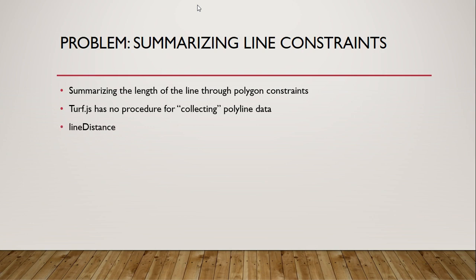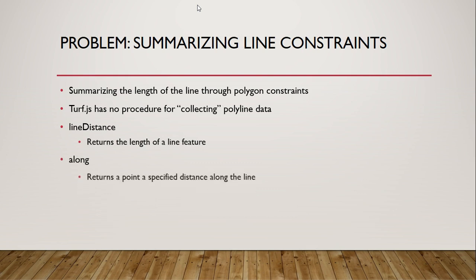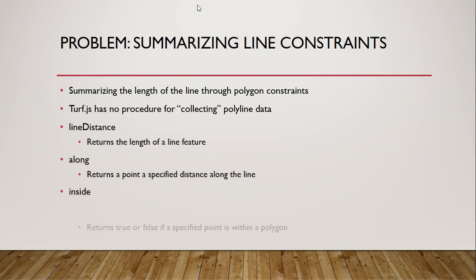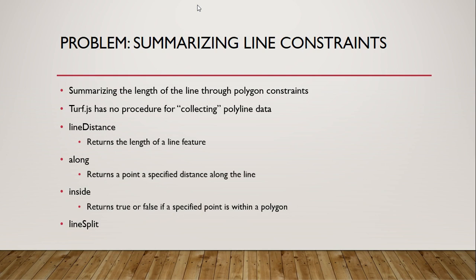But remember, Turf is a toolkit and it has all the tools we need to accomplish our task. One of them is a line distance method, which simply returns the length of a line feature, like the function we wrote for calculating the length of a line. The along method returns a point that is a specified distance along a line — so if a line is ten miles long and you specify five miles, you'll get the exact middle of that line. The inside method takes a point in a polygon and returns true or false depending on whether the point is inside the polygon. And finally, the important one that makes everything work: the line split method takes a line and a polygon and splits the line anywhere it intersects the polygon boundary.